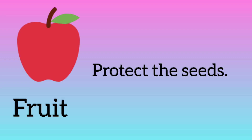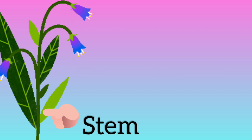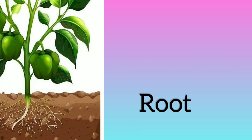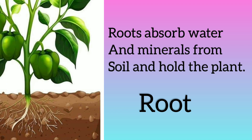Next part is stem. Stem is strong and helps hold the plant. Last part is roots. Roots absorb water and minerals from soil and hold the plant so it does not fall over.